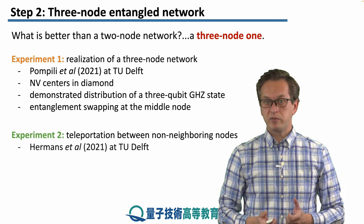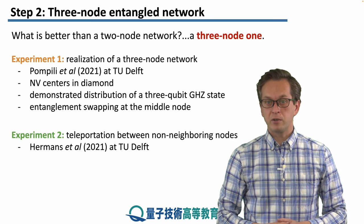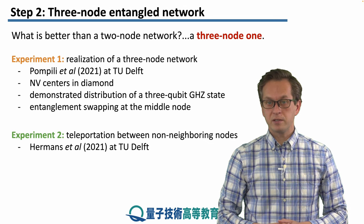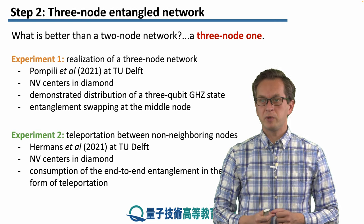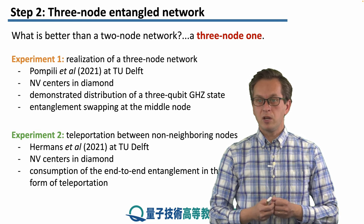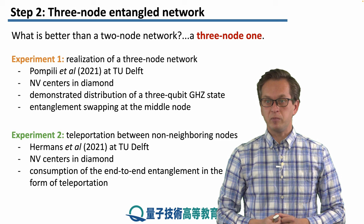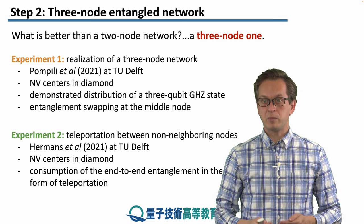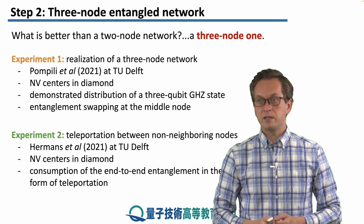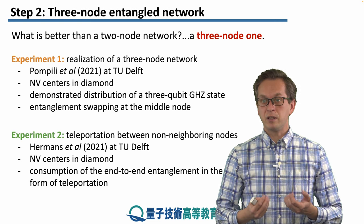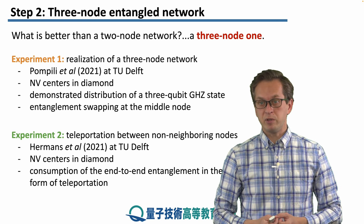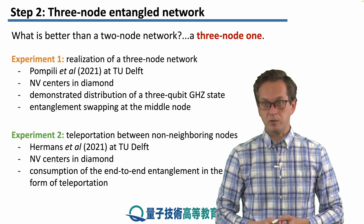It was performed by the same group. The first author was Hermanns and they used the same physical system. The first experiment is about distributing the entanglement between non-neighboring nodes, and the second experiment was about making sufficiently many improvements to the setup so that teleportation can be achieved between these non-neighboring nodes.